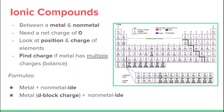If we have two sodiums, then two times plus one becomes plus two, and that plus two cancels out the negative two. So that balances it out and gives us a net charge of zero — our compound would be Na₂O.